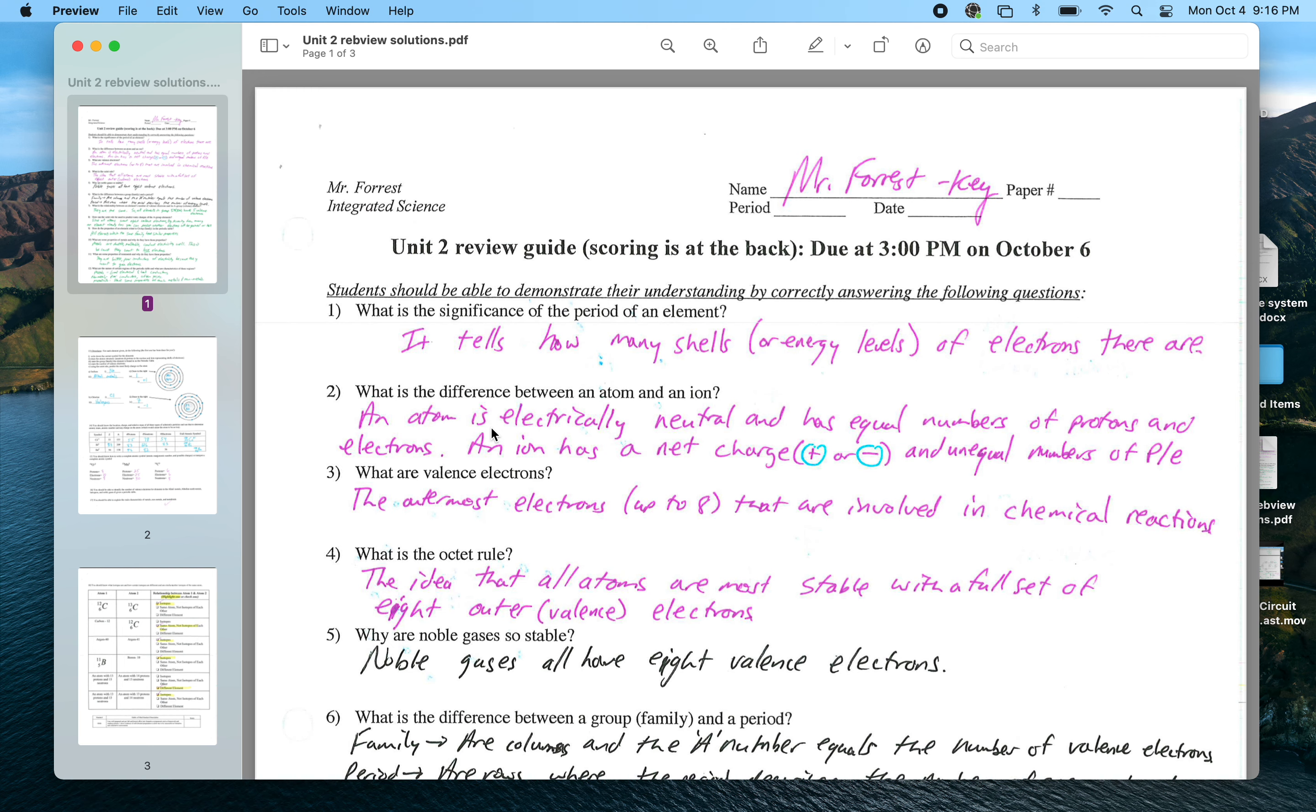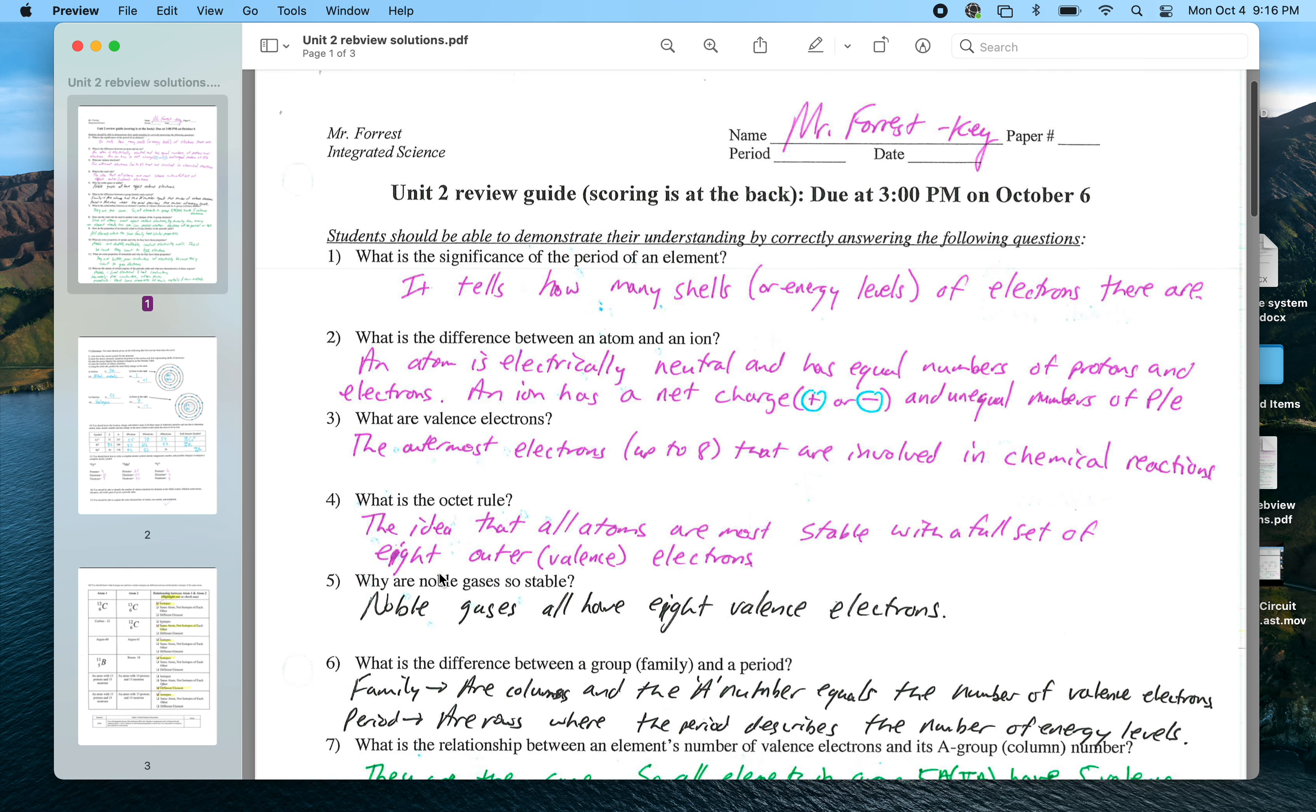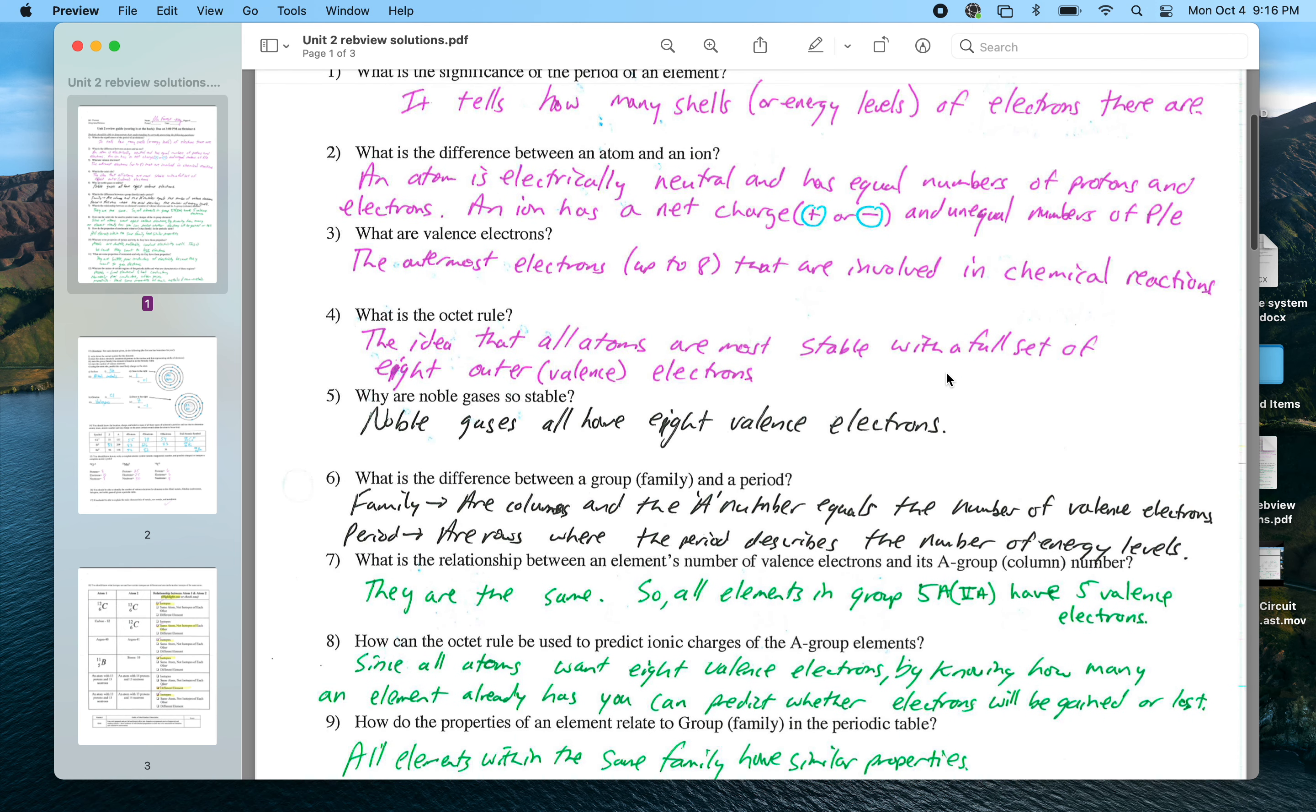Those are the ones that cause the atom to react with other atoms and undergo chemical reactions. The octet rule is the idea that all atoms are most stable with a full set of eight outer or valence electrons. They can get this outer set of eight if they only have a couple outer electrons by losing those electrons and then going back and shrinking to the next smaller shell, which would be full with eight electrons. Or if they have five, six, or seven outer electrons, it might be easier for them to gain those outer electrons to get the full set. Noble gases are stable because they have eight valence electrons.